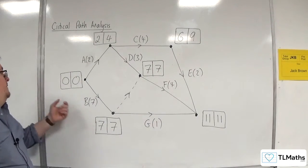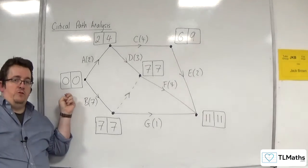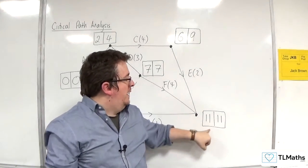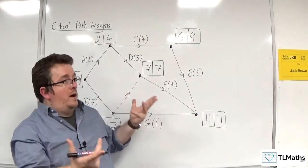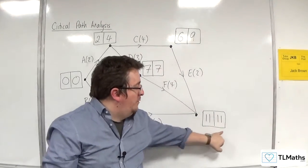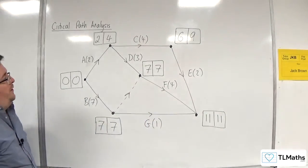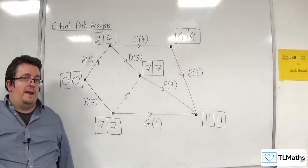So you should always find that for your start node, it should always be zero, zero. And the end node should be the shortest time that it takes to, the time required to complete the project in both of those boxes. So that is how we complete the forward and backward paths through an activity network.